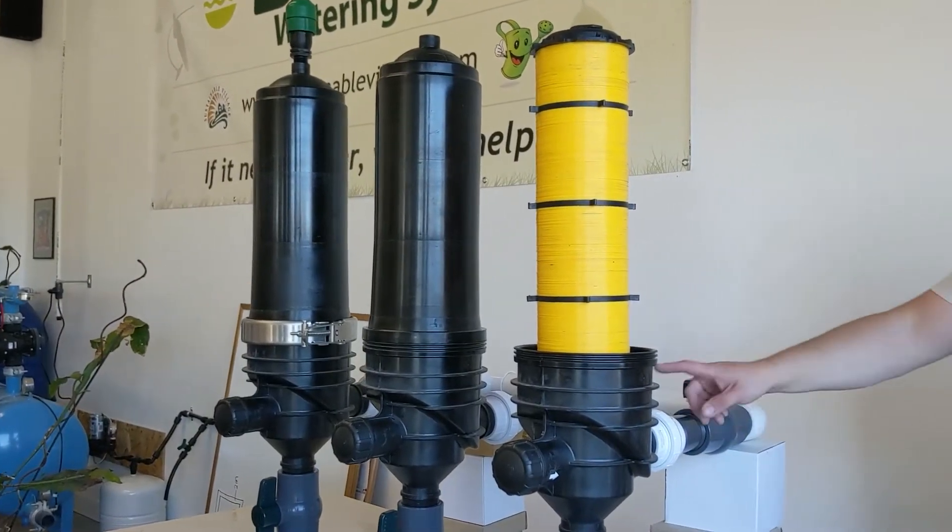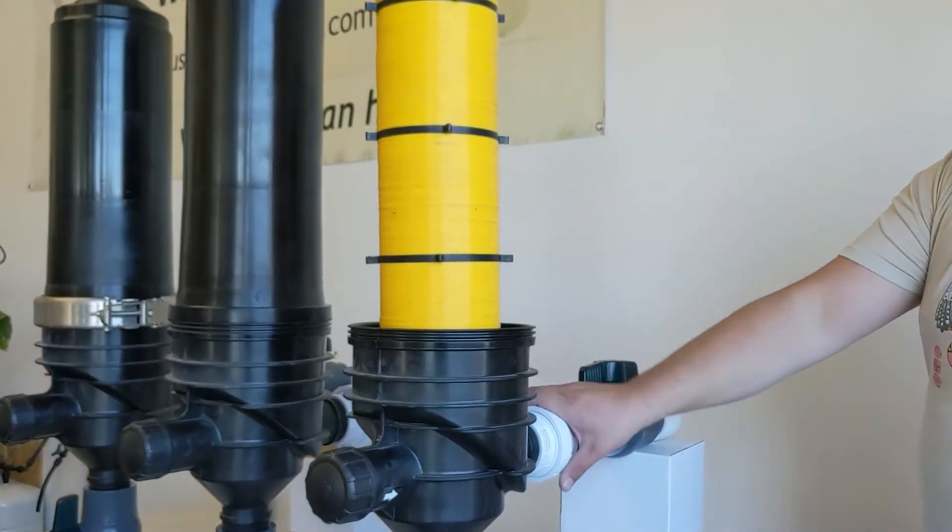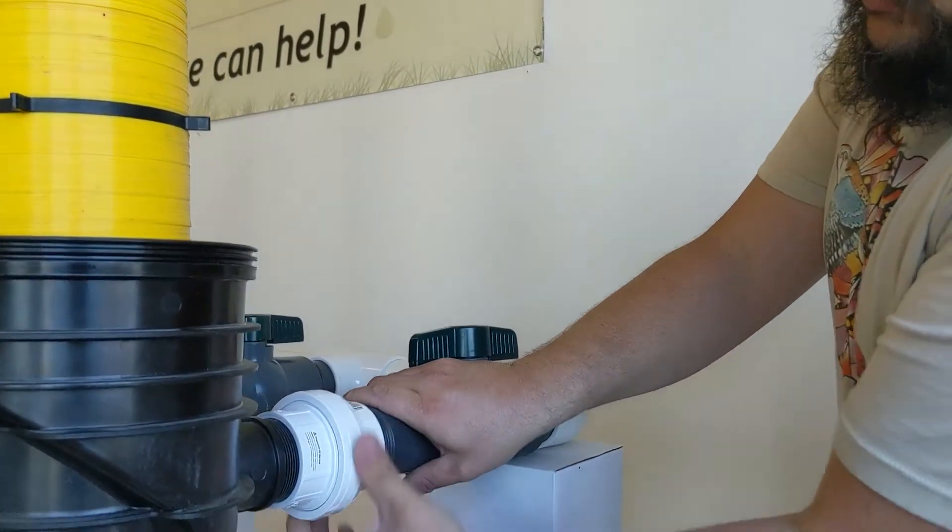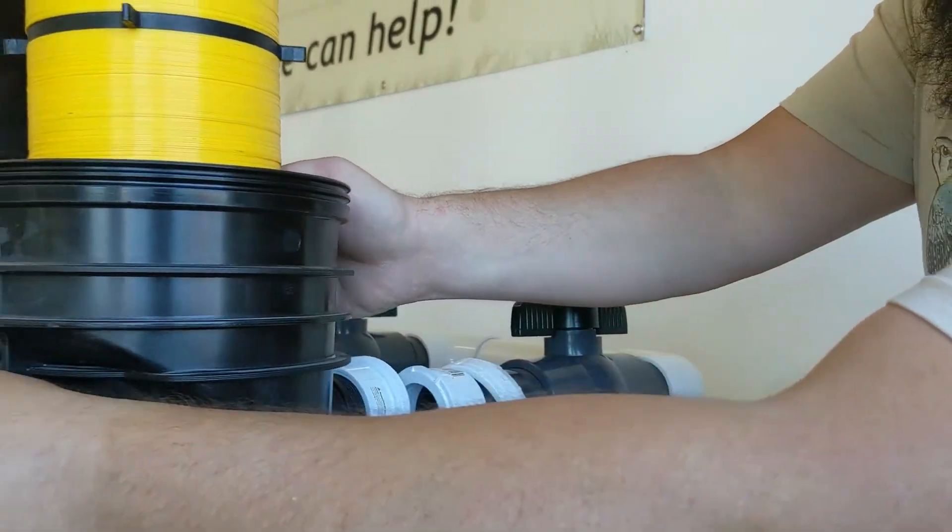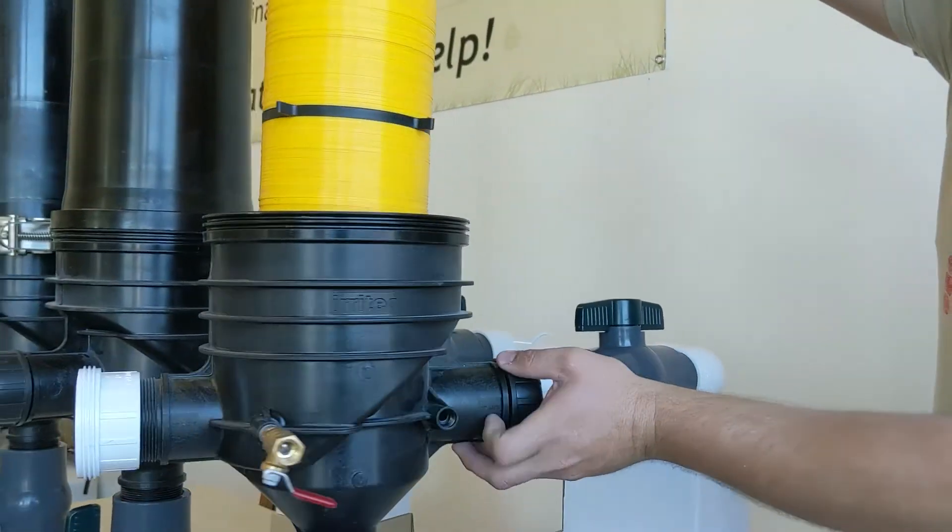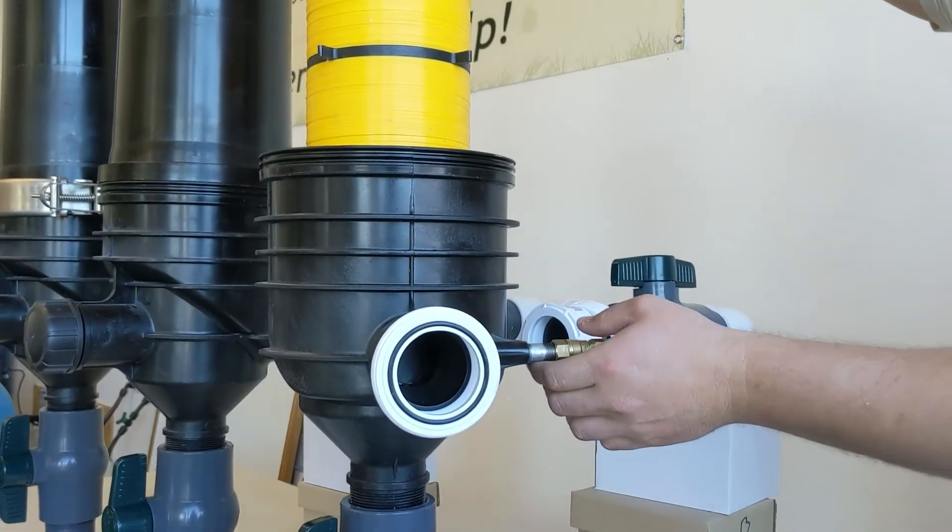We build these with the two-inch union with the Buna O-ring in here so that I can disconnect these and then actually just unscrew individual filters in case I need to service one or replace one for some reason.